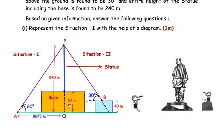In situation 2, the student is standing on a base which is 40 meters higher than ground level. This blue box represents the base at point B, which is 40 meters high. Standing on that base, he looks at the top of the statue at point P, and his angle of elevation becomes 30 degrees. This represents situation 2.